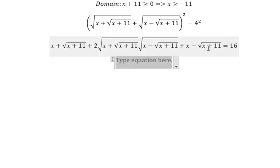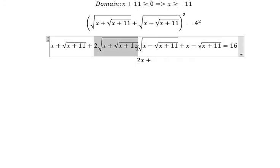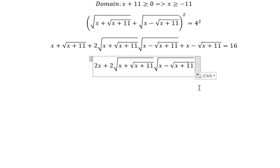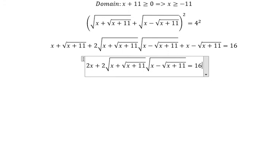Next, this one and this one they cancel, we have two x plus this one equals 16, then we divide both sides with number two.